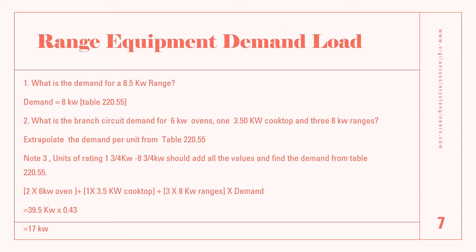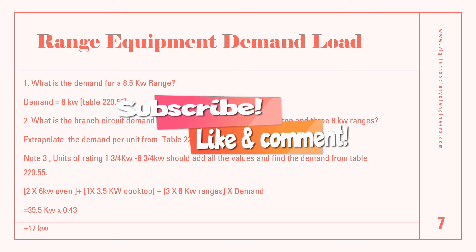Next, we look at range minimum demand. Say we have a range of 8.5 kilowatt and need to find the demand. We simply go to Table 220.55 and extract the value. This value falls under column C — the demand for a range less than 12 kilowatt. For one unit, the demand from the table is 8 kilowatt.